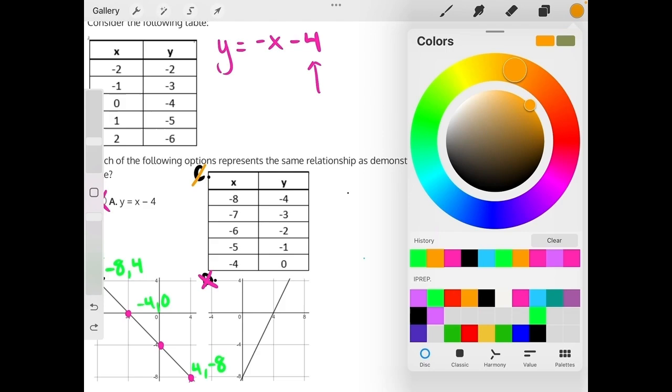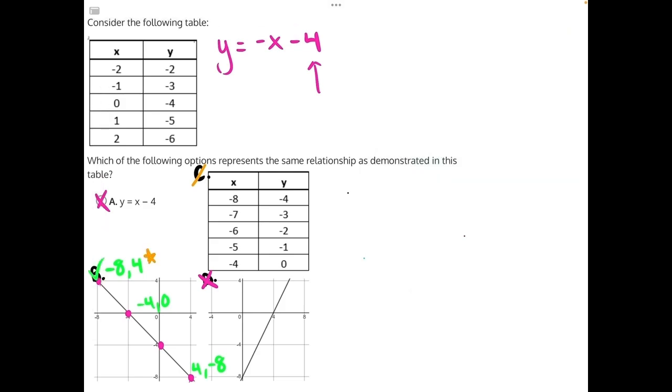We will start with this one. We'll have a y is equal to negative x minus 4. We'll plug in 4 for y, and we will plug in negative 8 for x.